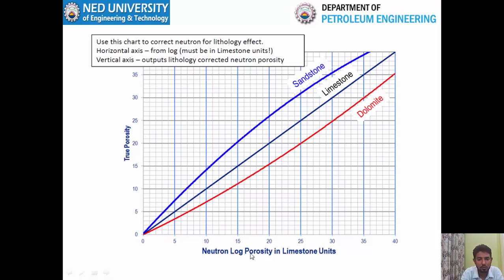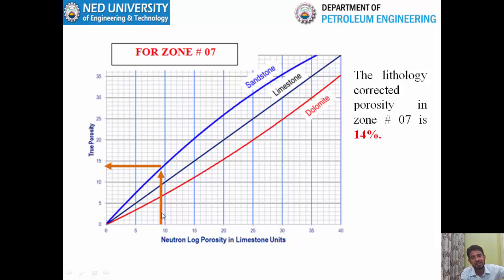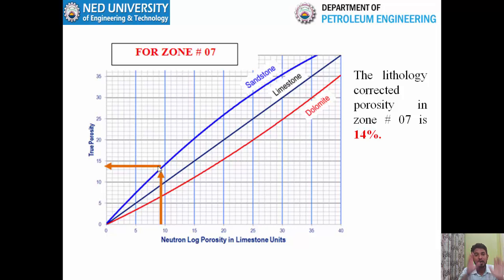Using the lithology correction graph, on the x-axis we have neutron log porosity in limestone units and on the y-axis the true porosity after lithology correction. For zone number 7, the neutron porosity value is 9%. We enter from the x-axis at 9%, move vertically to the sandstone matrix line, then move horizontally to the y-axis to read the true porosity, which is 14%. So the reported 9% in limestone units corresponds to 14% true porosity in sandstone. Zone number 7 has 14% true porosity, not 9%.